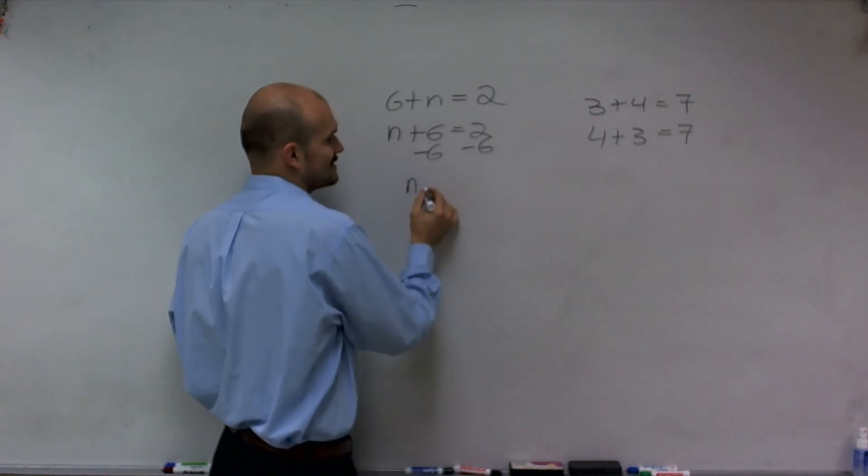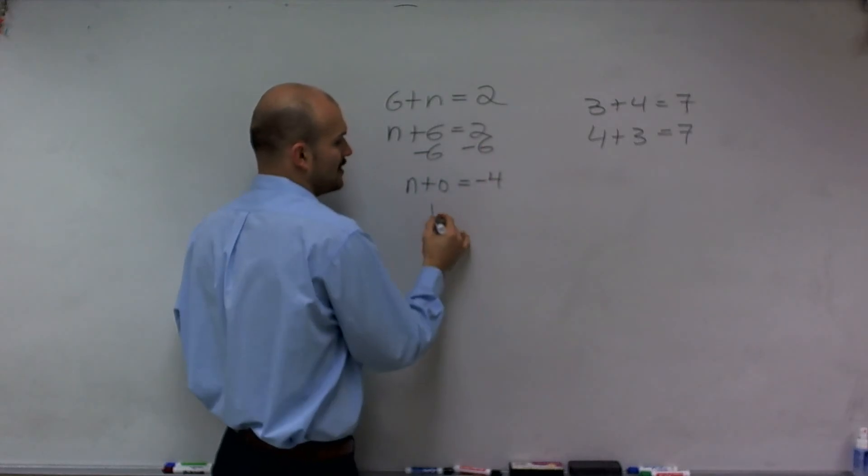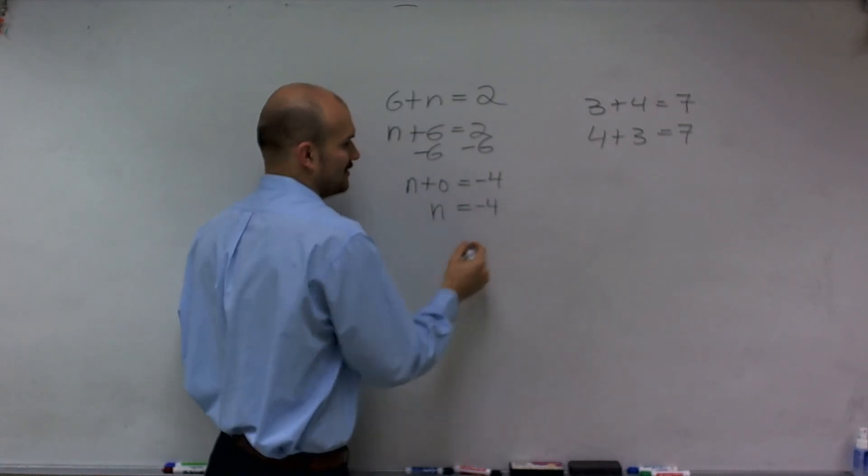Therefore, 6 minus 6 is going to give us 0. 2 minus 6 is going to equal negative 4. Therefore, I have n equals, because n plus 0 is n. Therefore, n equals negative 4.